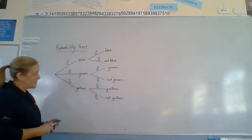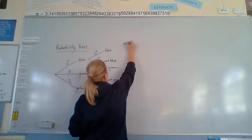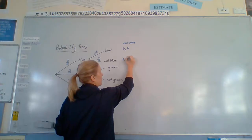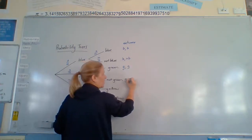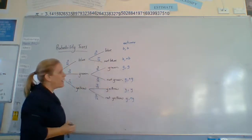At the end of our probability tree, we write our outcomes. So, we've got here blue, blue. Blue, not blue. Green, green. Green, not green. Yellow, yellow. Yellow, not yellow. Those are our outcomes.